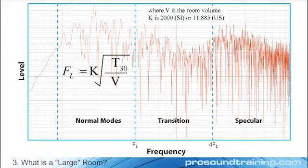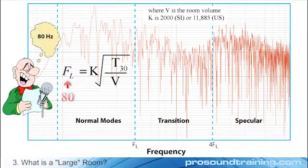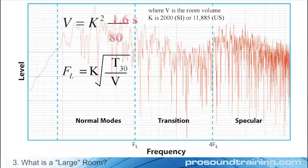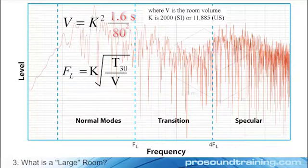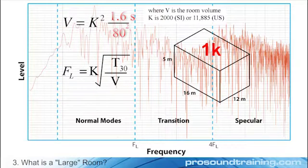Using a low frequency limit of 80 Hz for speech and a reverberation time of 1.6 seconds to approximate the decay time required for a minimum density sound field, solving for room volume reveals that a large room for speech becomes about 1,000 cubic meters, or about 35,000 cubic feet.